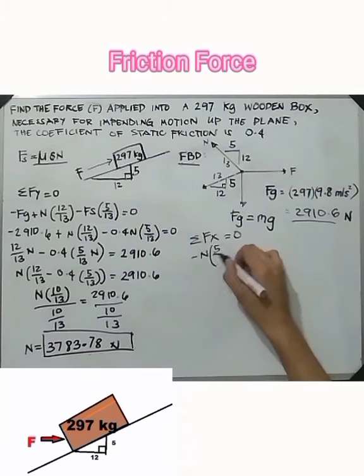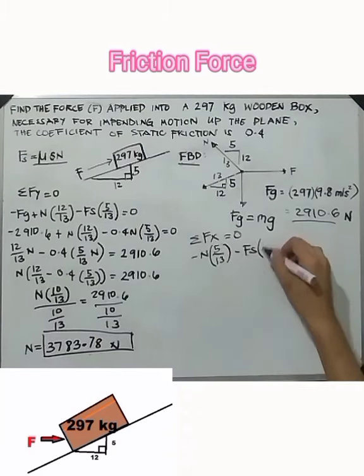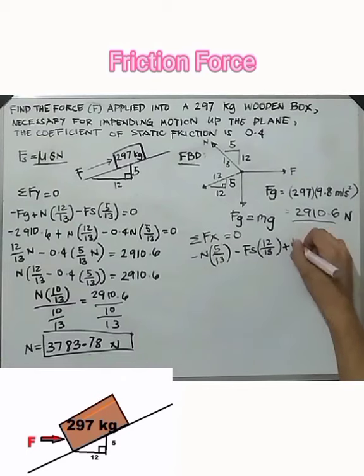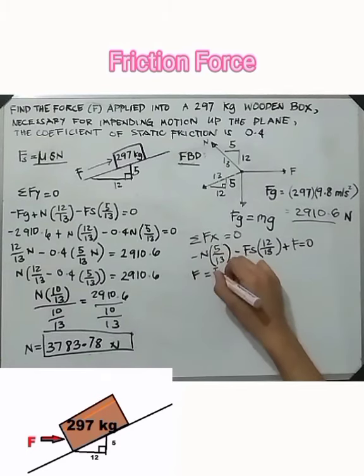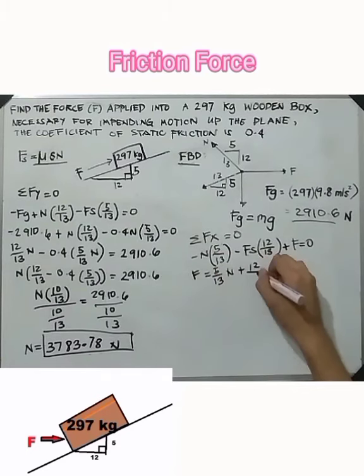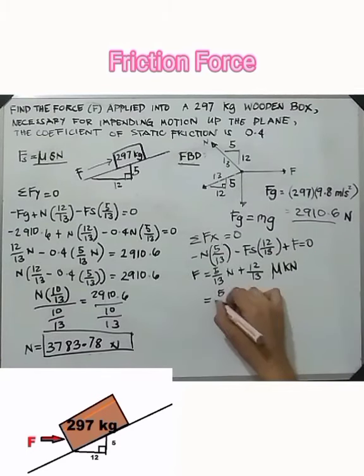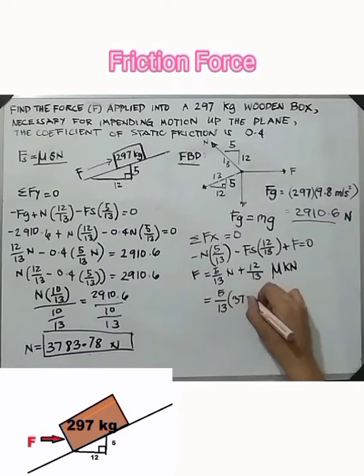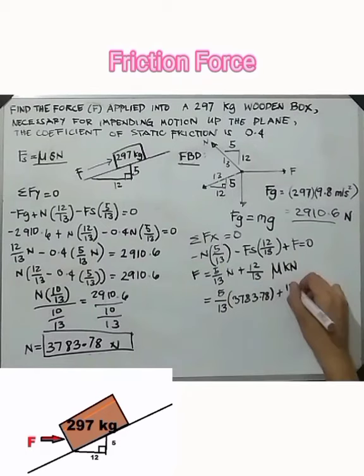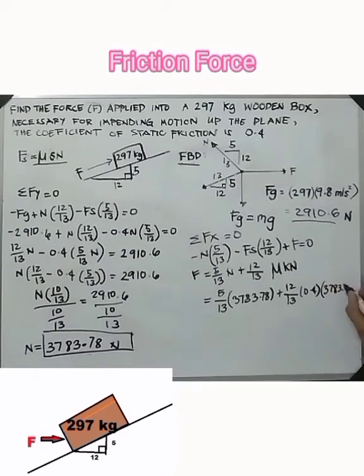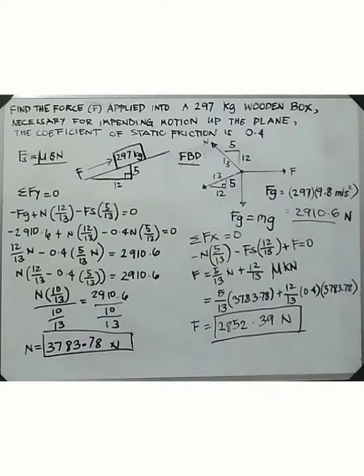From the summation of Fx = 0, combining the normal force components, we finally get the applied force F = 2852.39 Newtons.